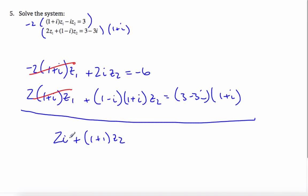This is z2 still, equals negative 6 plus, if I multiply this now, I can get 3 plus 3i minus 3i and then minus 3i squared, which is plus 3. Again, I can see those cancel.